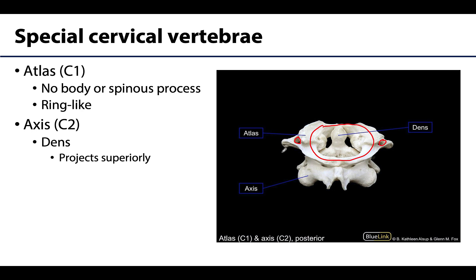C2, the axis, is a very robust vertebra with a notable superior projection referred to as the dens, sometimes called the odontoid process. This serves as a pivot about which rotation of the head can occur — so if you're shaking your head no, it's going around this region between C1 and C2.